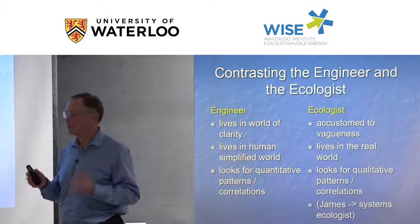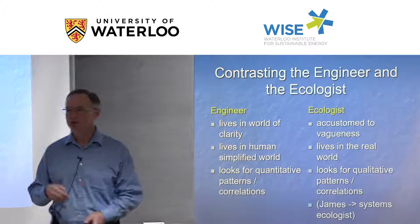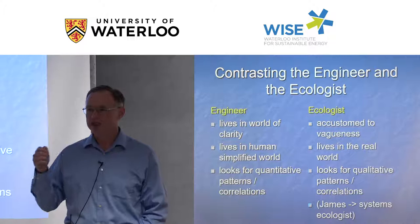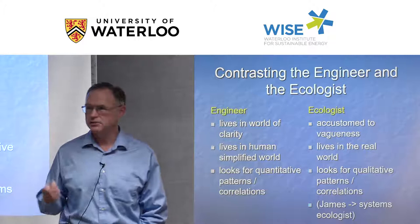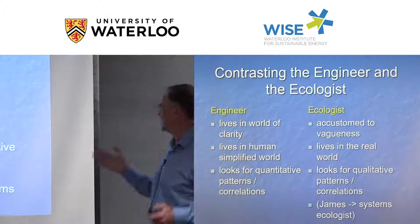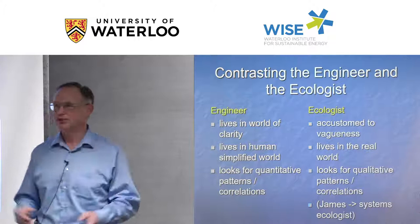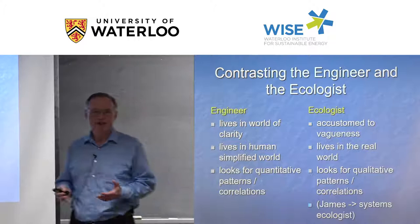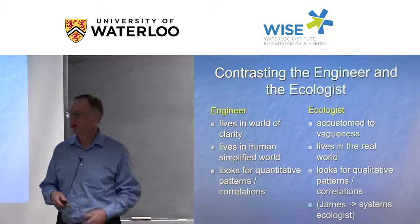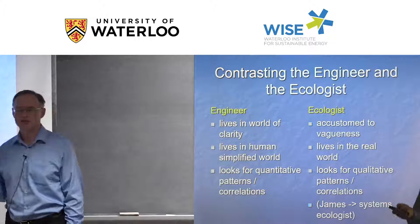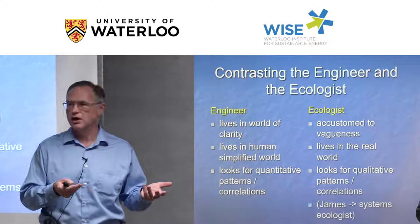Contrasting the two fields: engineers live in the realm of clarity — when solving a problem, the environment temperature is known, the amount of energy coming in is specified, and inputs and outputs are defined in system diagrams. In contrast, ecologists work in an area of vagueness — they don't know all the species that may be involved in energy transfers within the food web. The engineer lives in a human-simplified world, making assumptions like constant environment temperature, and looks for quantitative patterns and correlations.